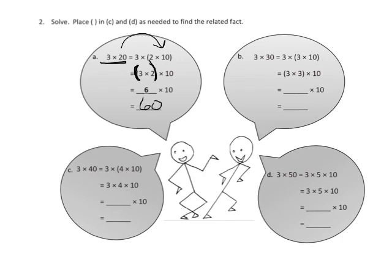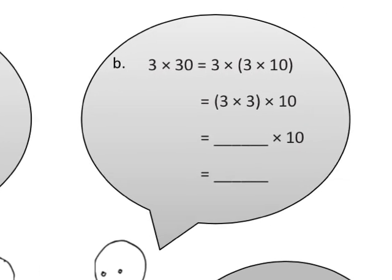Let's repeat that process. The 30 becomes 3 times 10, and then we're going to use the associative property to regroup and get 3 times 3, which is 9, and then 9 times 10 is 90.